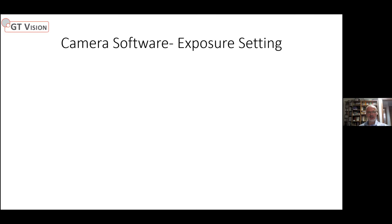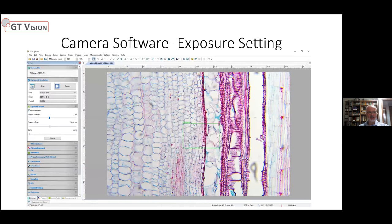Let's look at some camera software features. One key thing is setting the exposure — you can set it to auto-exposure, with a green square defining the target area, and the software optimizes the image. Or you can turn auto-exposure off and set the exposure time manually. You can also change the resolution — reducing resolution gives a faster frame rate. The software, which comes free with the camera, offers a huge range of options to optimize and adjust the image.